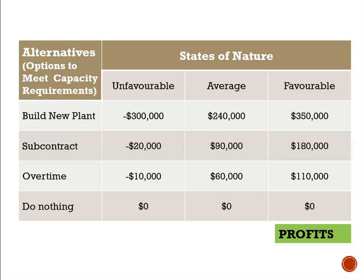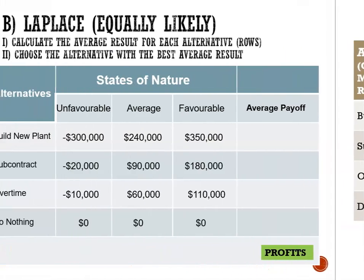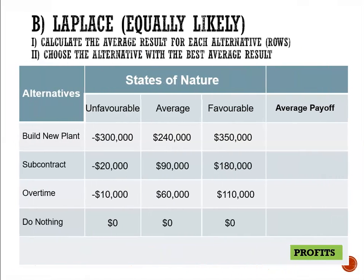Here we have another payoff table looking at the options available to meet capacity requirements. We have four choices: to build a new plant, to subcontract, to do overtime, or do nothing. As usual, step one is to calculate the average for each alternative.